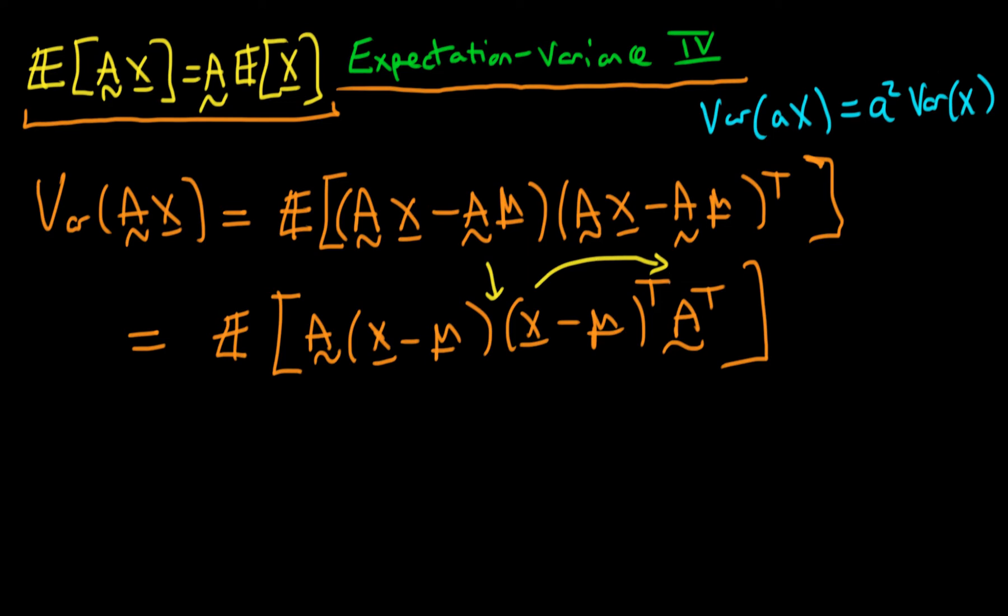So because of the fact that we know that the matrix A is just a constant, that means we can just take it outside of our expectation. So we're going to have this as being equal to A times the expectation of (x minus mu)(x minus mu) transposed, and then we're going to finally multiply it by A transposed.